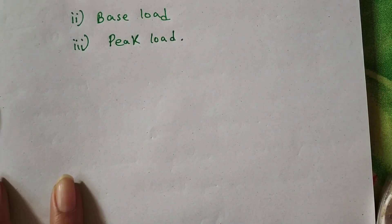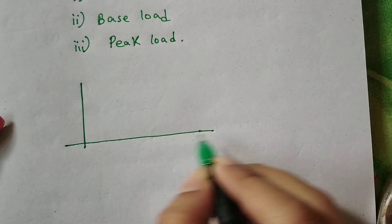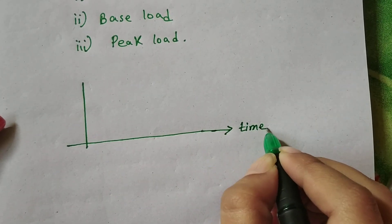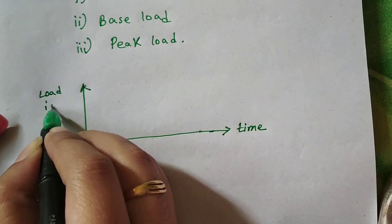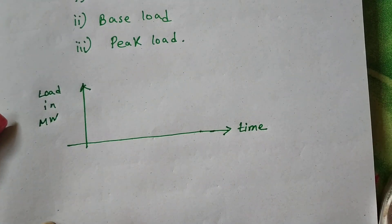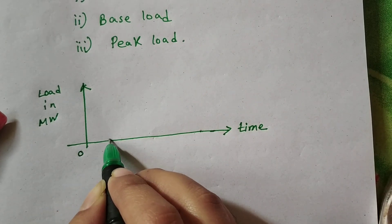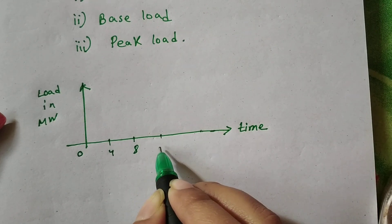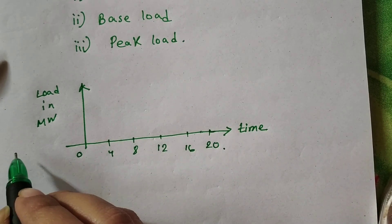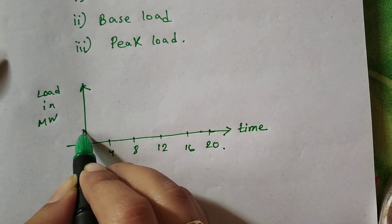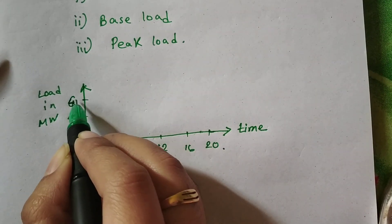Let's draw a graph. This is time, this is load in megawatt. Take time from 0, 4, 8, 12, 16, and 20. And here for megawatt, let's take 20 megawatt, 40, and 60 megawatt.